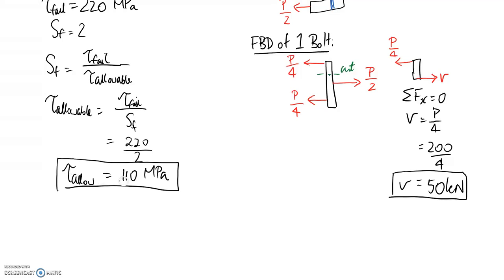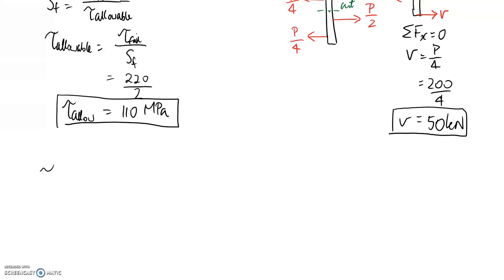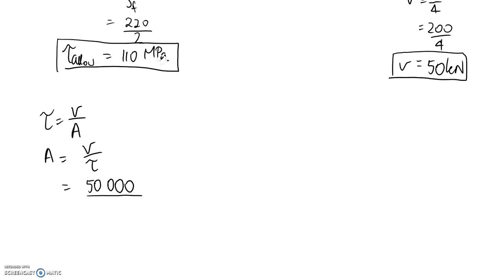Now that we know the stress and the force, we should be able to calculate the cross-sectional area and then convert that into a diameter. The equation that we need to use is tau equals V/A, and we're going to rearrange this for area. The shear force is 50 kilonewtons, I'm going to put this in newtons so it's 50,000. The shear stress that we need to use is the allowable one, obviously not the failure one because that would be designing for failure. So this becomes 110. So 50,000 divided by 110 is 454.5, and because I use newtons and megapascals, this is going to come out in millimeters squared.